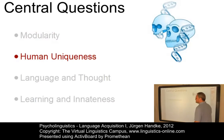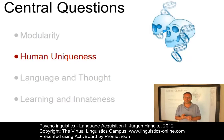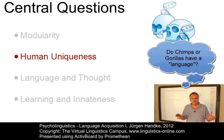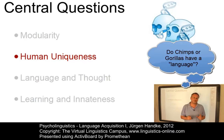Human uniqueness is another issue. Do only humans possess language, or do other species also have the capacity to acquire language? Various attempts to teach chimpanzees and gorillas aspects of human language have not yet produced convincing evidence against the position that language is a uniquely human ability.